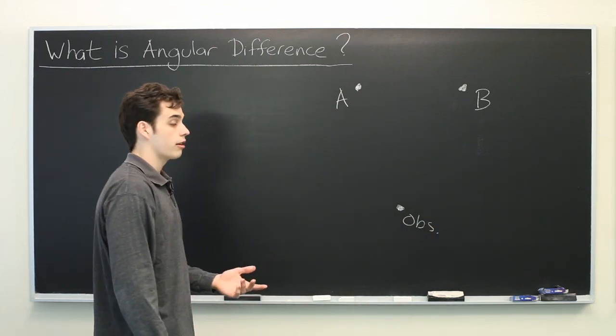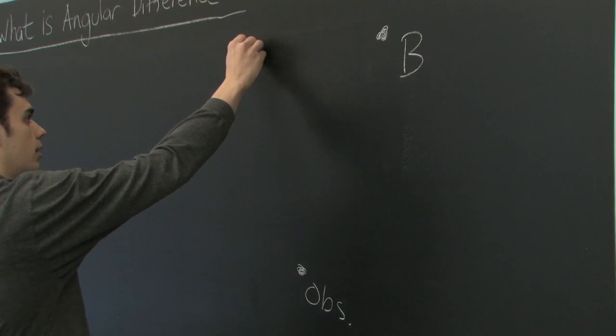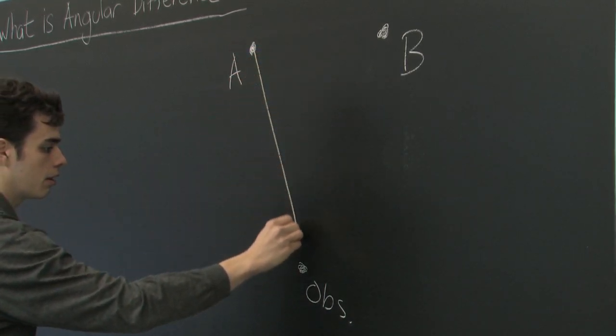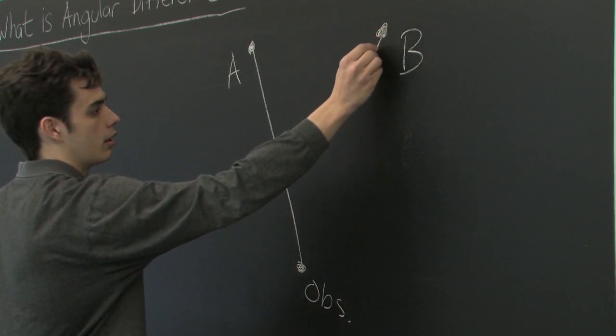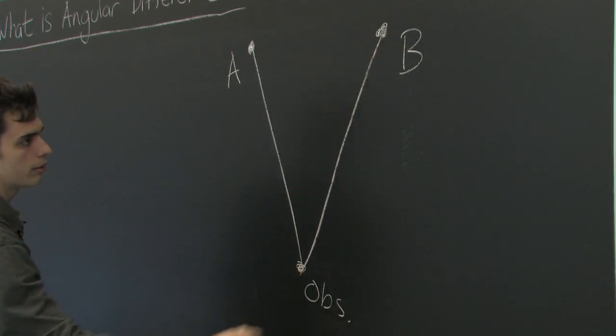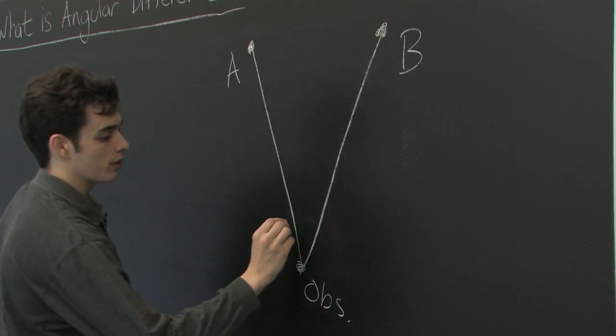To find the angular difference, simply connect a line between the observer and each object, and then measure the angle between them.